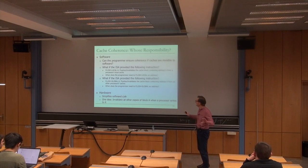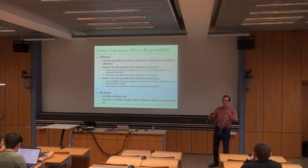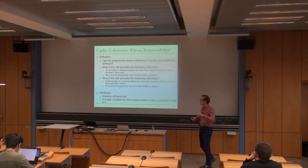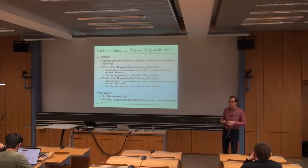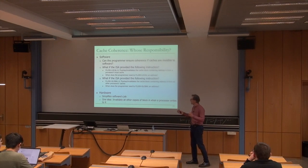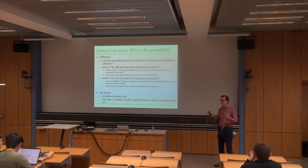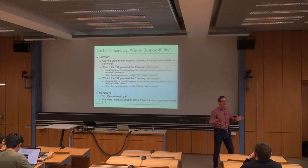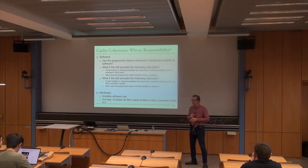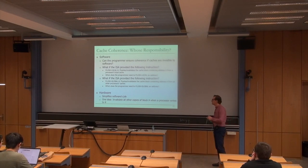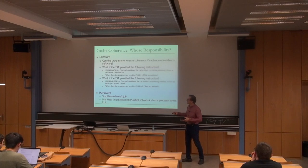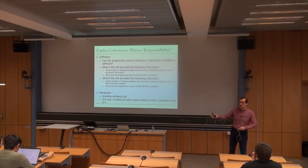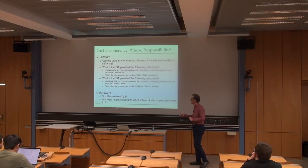My favorite example of processors that do not provide cache coherence support is IBM's Cell Broadband Engine — the first heterogeneous multi-core processor designed. It had one control core and eight synergistic processing elements. They decided not to have cache coherence — it was all programmer-managed, software-based cache management. It was a nightmare to manage and write compilers for. It was used in the Sony PlayStation and then not used anywhere else after that.